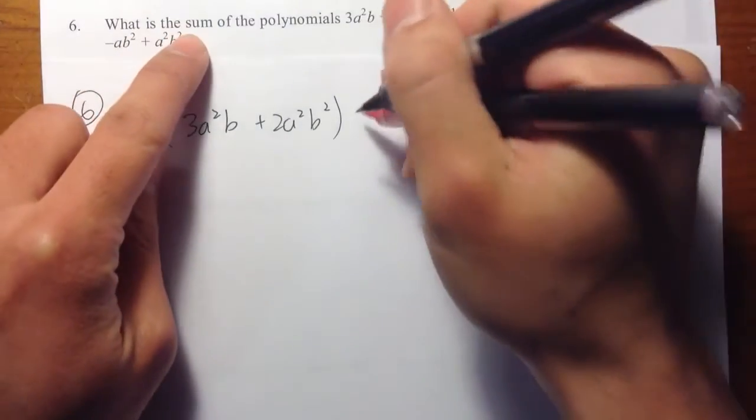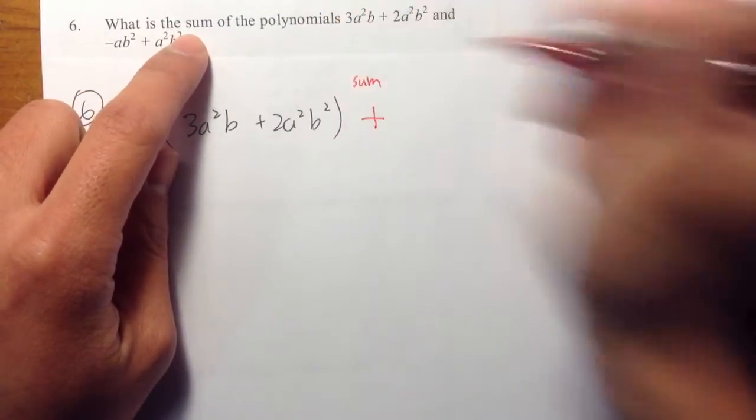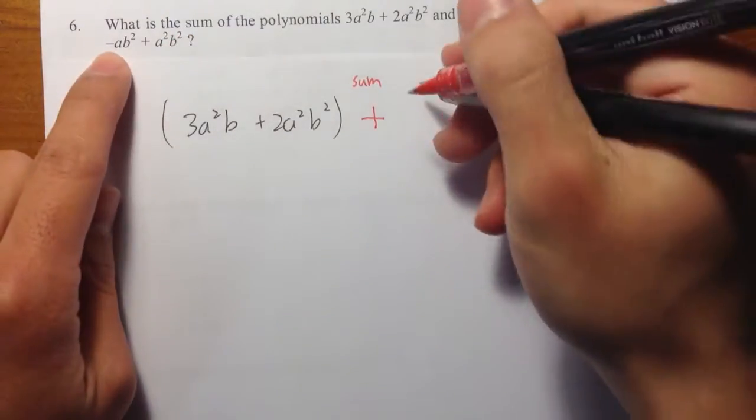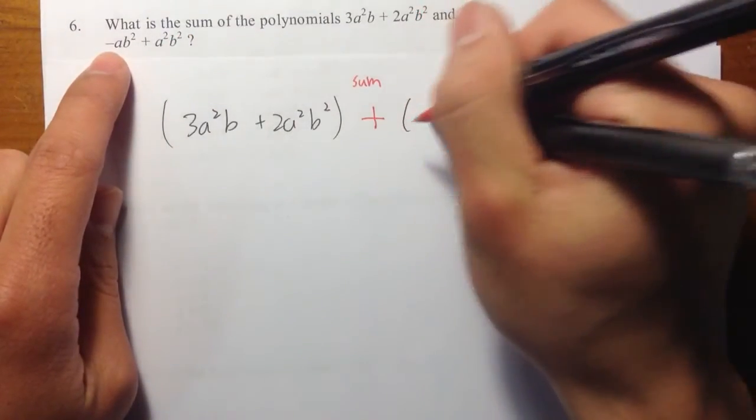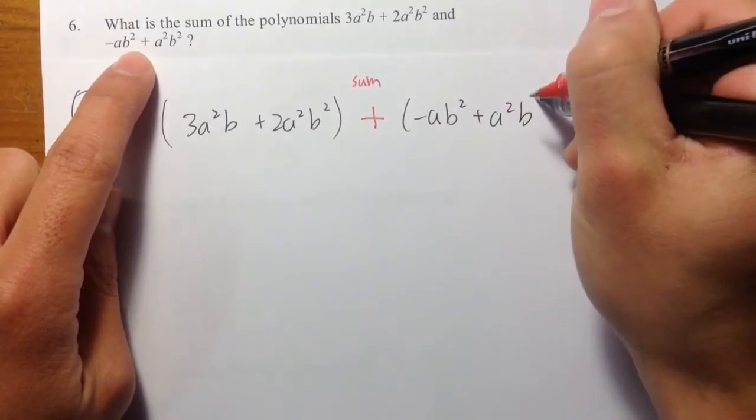And then because they are talking about the sum, I need to add. So this is the sum. The second polynomial, I have -ab² + a²b².